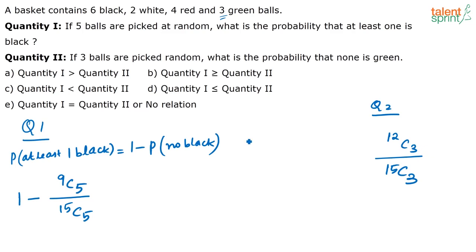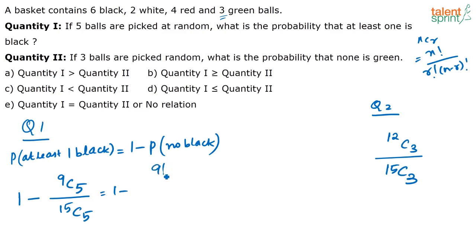I hope you know the formula for combinations: NCR = N factorial divided by R factorial into (N minus R) factorial. So here, looking at 9C5 by 15C5, this equals 1 minus 9 factorial by 5 factorial into 4 factorial, divided by 15 factorial by 5 factorial into 10 factorial. The 5 factorials cancel out.